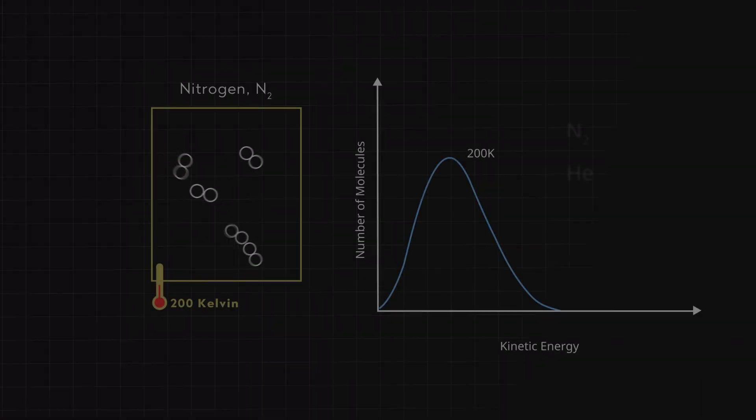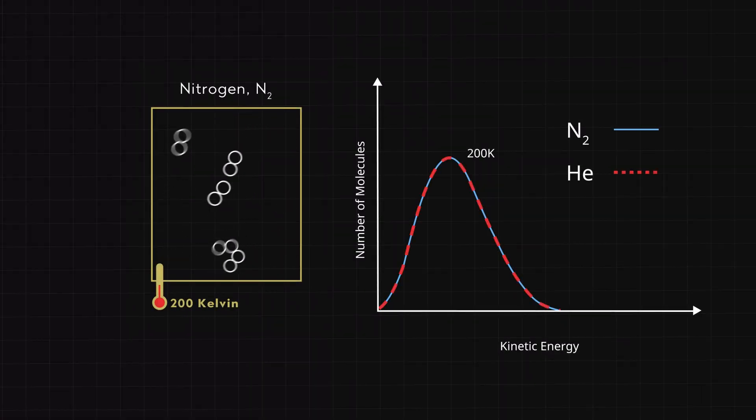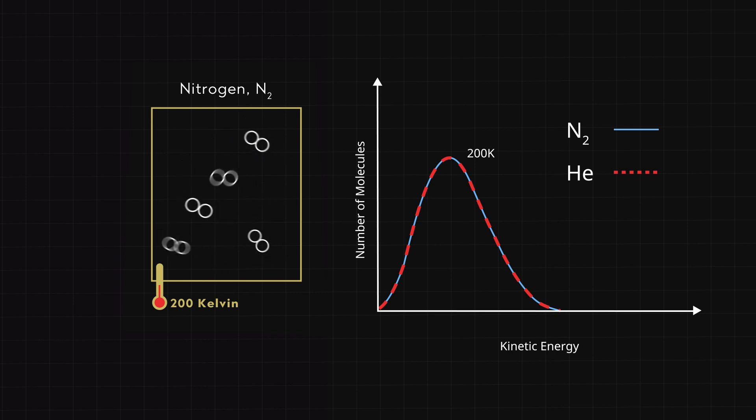This distribution is called the Maxwell-Boltzmann distribution. When we show it with kinetic energy on the x-axis, its shape depends only on the temperature. For example, if I compare a sample of nitrogen gas to a sample of helium gas, both at 200 Kelvin, the distribution of kinetic energies are identical. A helium atom is a lot lighter than a nitrogen molecule, but the mass of the particle doesn't matter for kinetic energy.